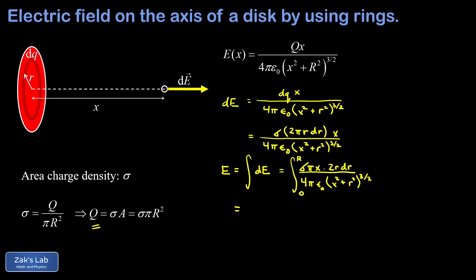We put in the limits of integration from zero to R. The sigma, π, and x are all constants — x is a fixed position. And 4πε₀ in the denominator is constant too. We cancel the π's and move all constants out front, giving sigma·x over 4ε₀ times the integral from zero to R of 2r dr divided by (x² + r²)^(3/2).